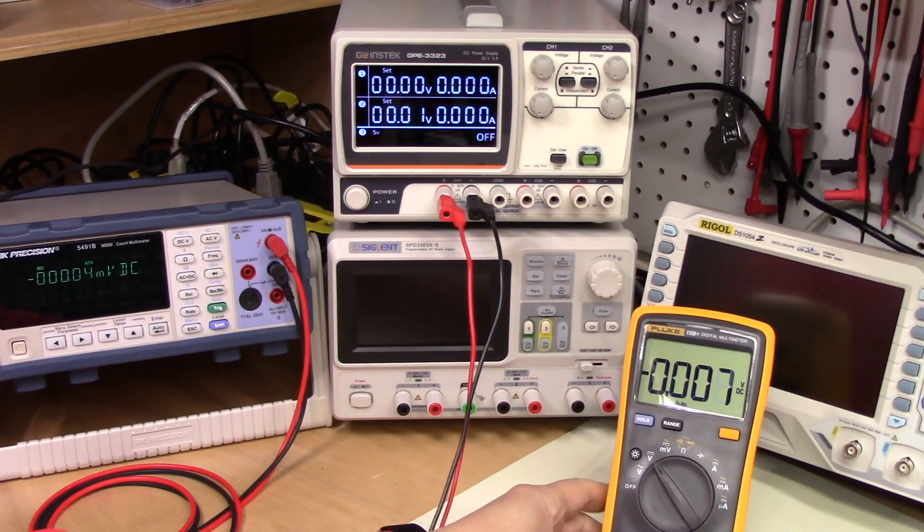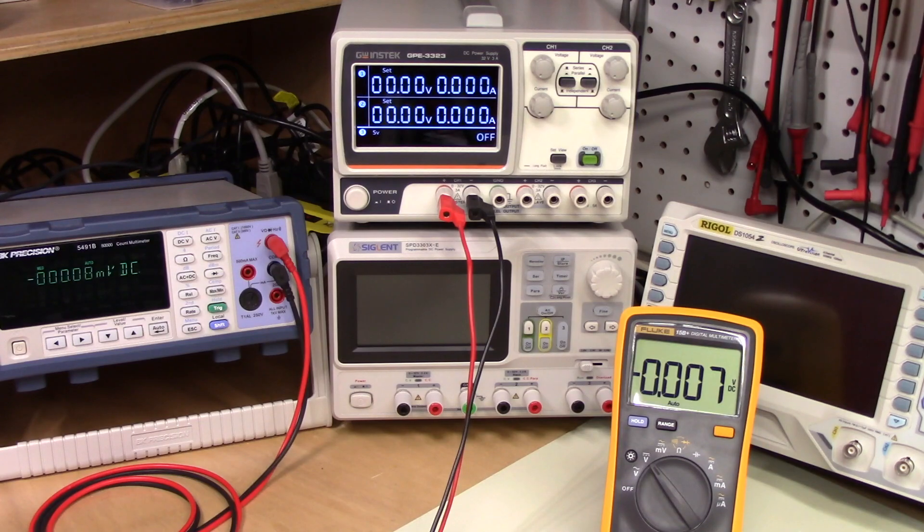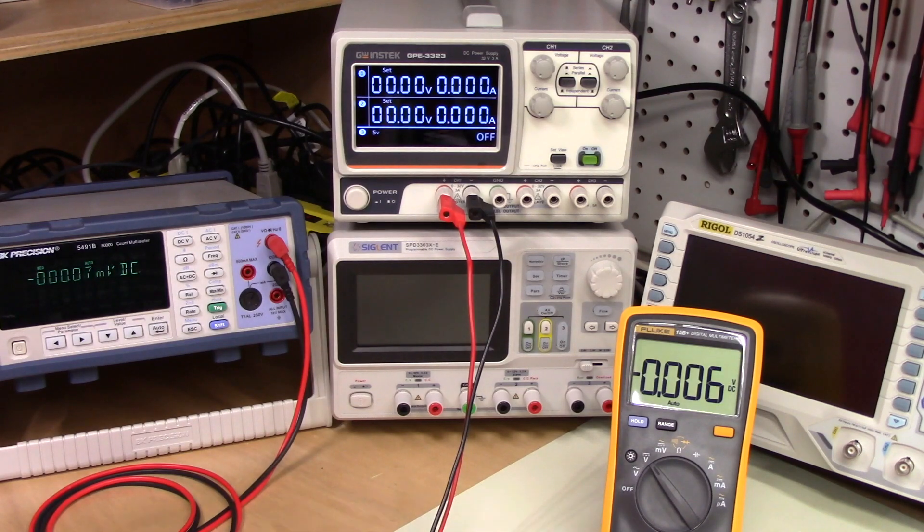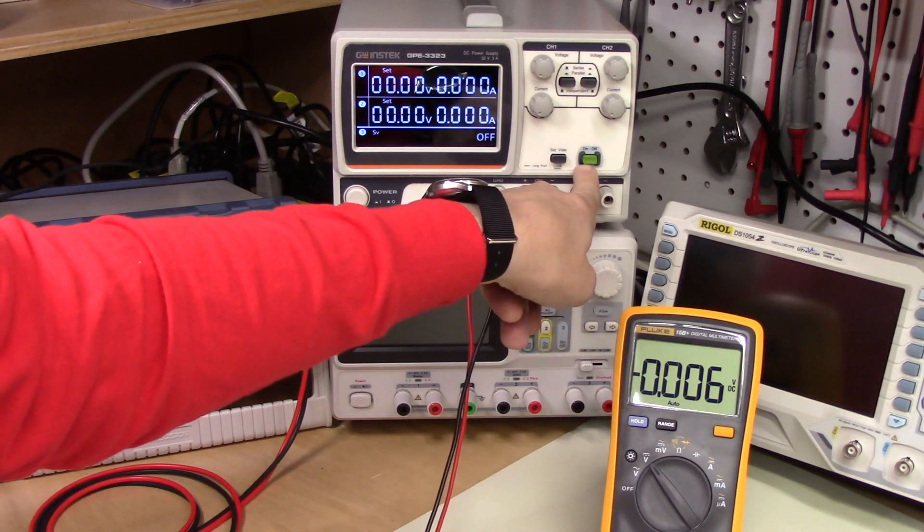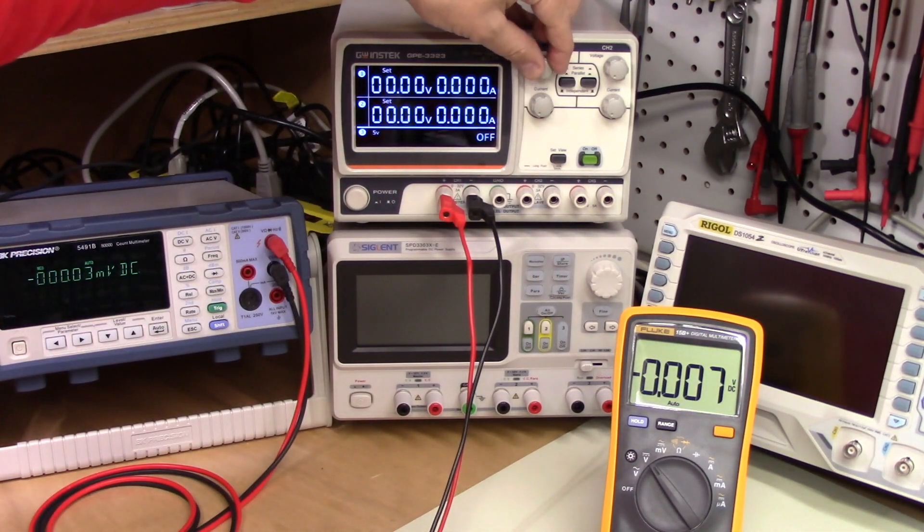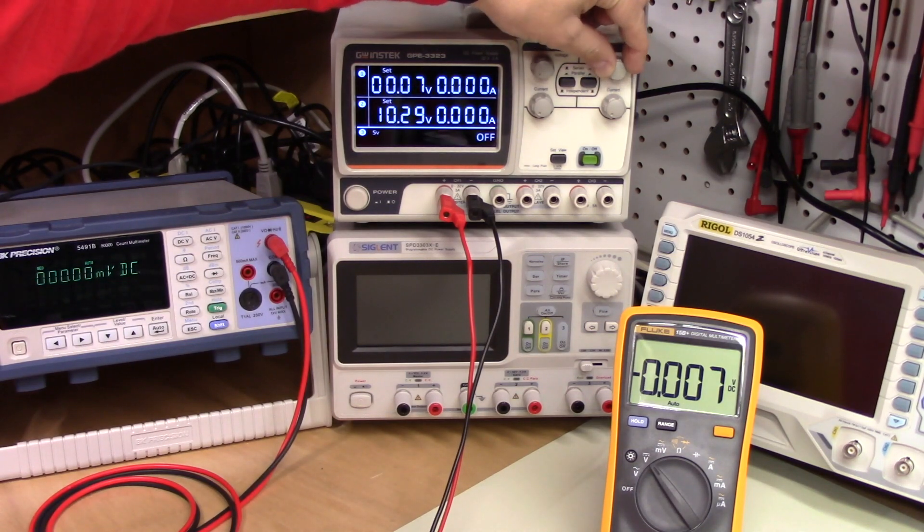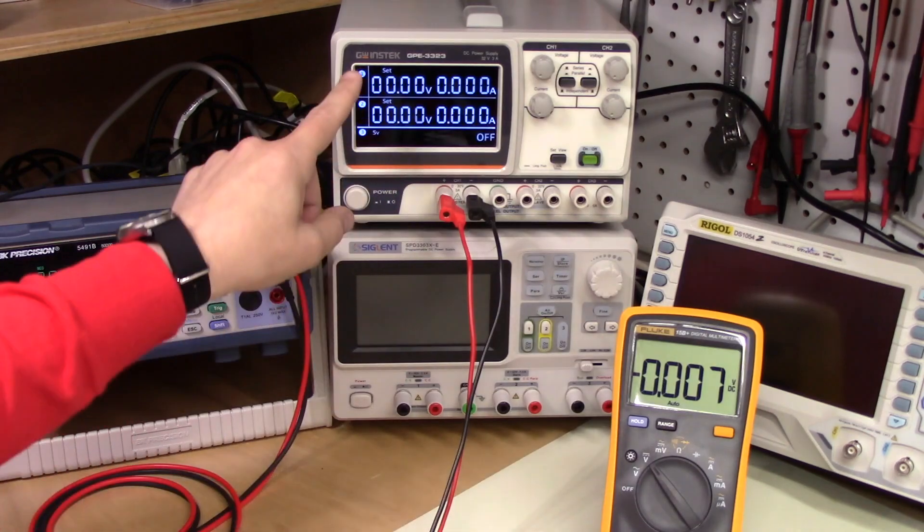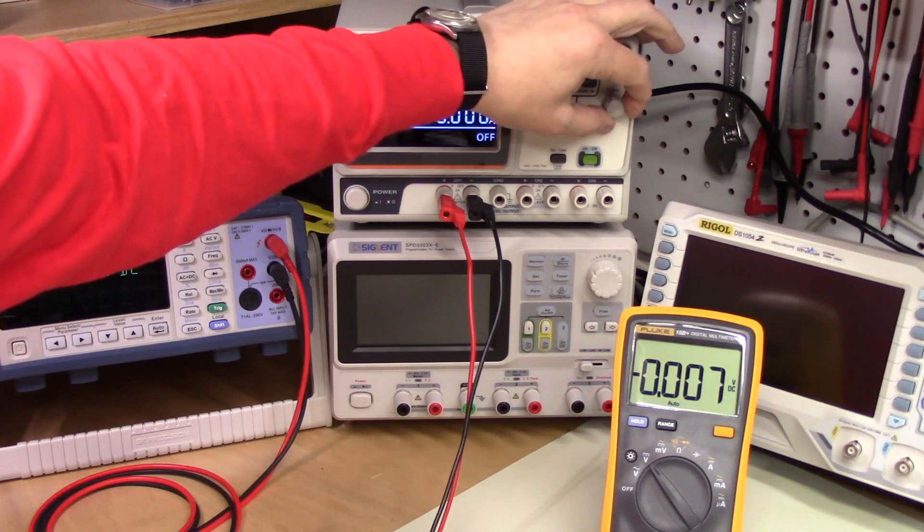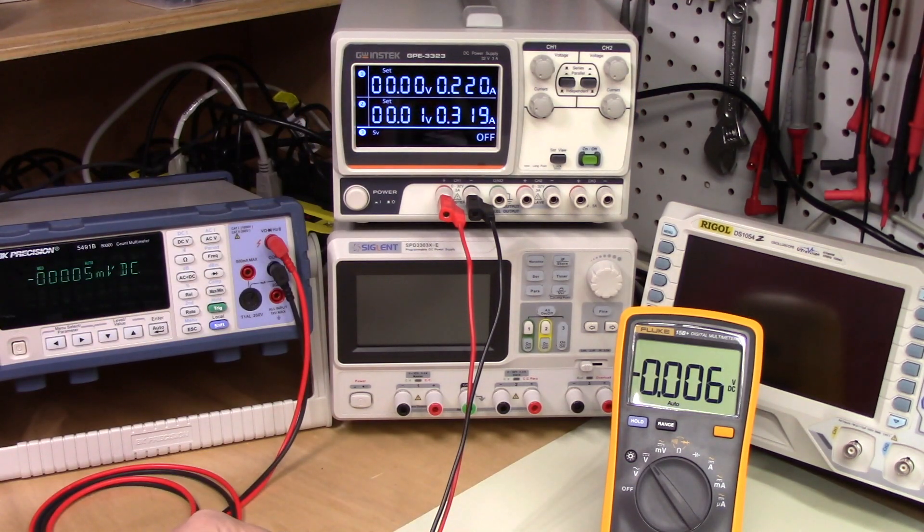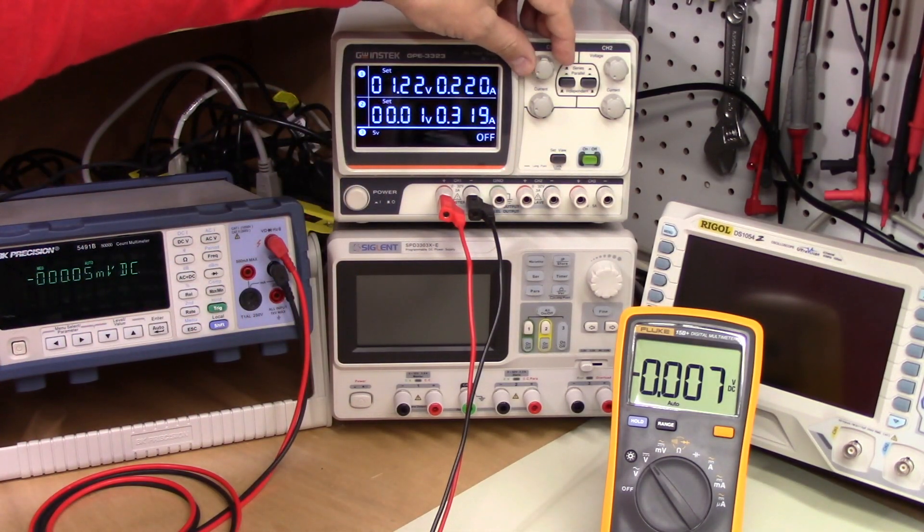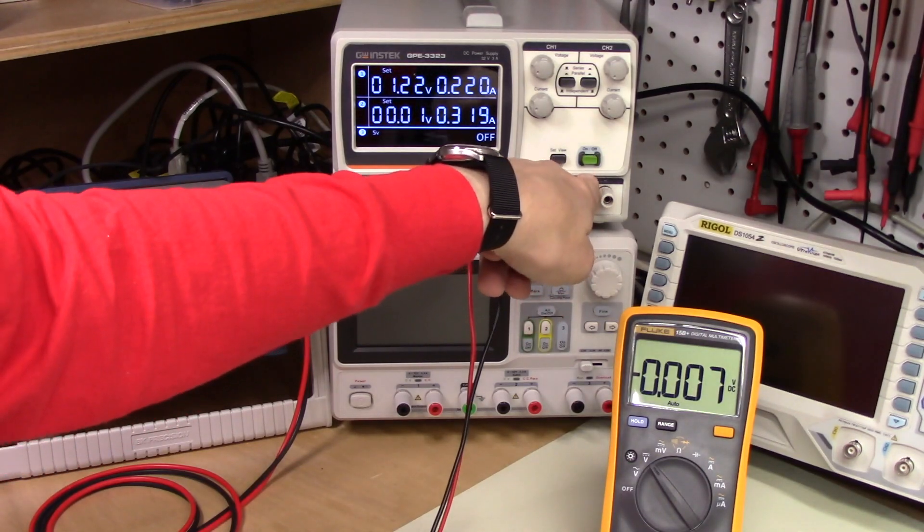All right, here's a very large displayed Fluke 15B multimeter. And the way that we turn the voltage on is... Right now it's in set mode, so I can set it to any value of voltage or current limit that I want. So we'll just put the current up a little bit so we are able to get an output.